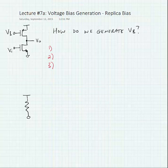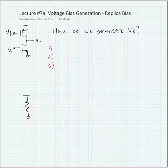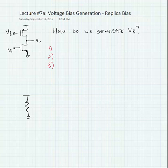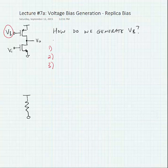In this lecture we're going to look at how we generate a voltage bias using what we call a replica bias circuit. We noted that when we were looking at the amplifier where we had a common source amplifier loaded with a PMOS current source, we needed to generate a voltage VB. This is a bias voltage. How do we generate a VB for this circuit? We use a replica bias technique.